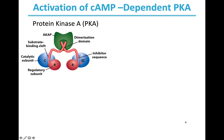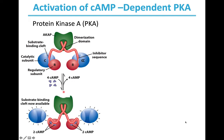When four cyclic AMP molecules bind — two to each regulatory subunit — the inhibitory sequence is moved away from the catalytic subunit. This results in the catalytic subunit becoming available for substrate binding. This is how cyclic adenosine monophosphate activates protein kinase A.